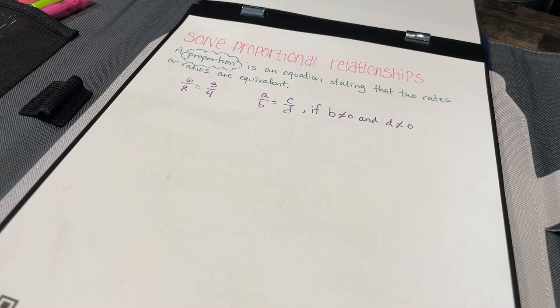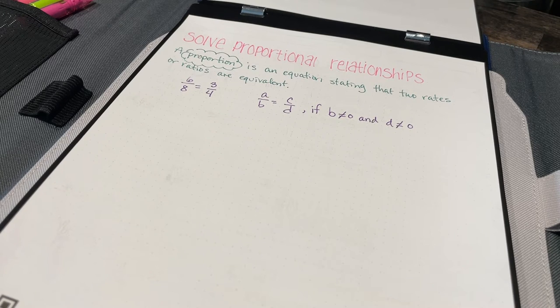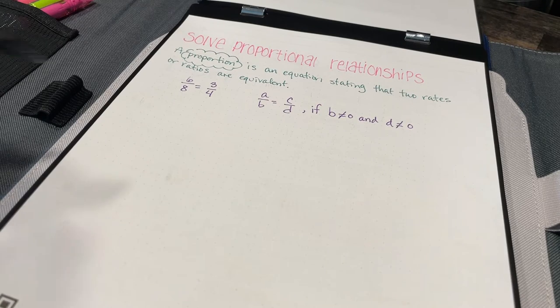In this lesson we're going to solve proportional relationships. I want to go back to our essential question, which is how can you show that two quantities are proportional. In lesson 1.4 we looked at tables as a way of determining if there was a constant rate or constant ratio. In lesson 5 we looked at using graphs to determine if something was proportional, and we found out that if the graph passed through the origin and it was a straight line, then it was a proportional relationship. So in this lesson we're going to try to answer that same essential question using a different method.